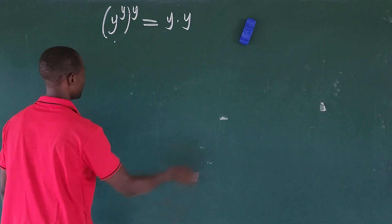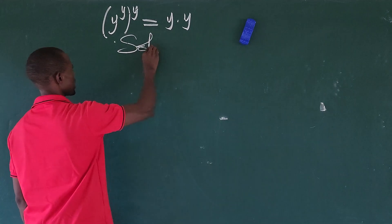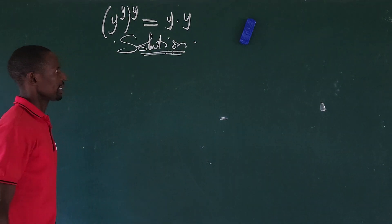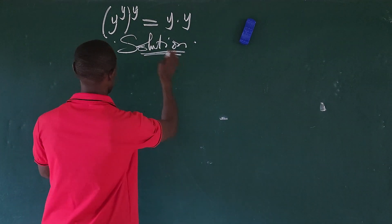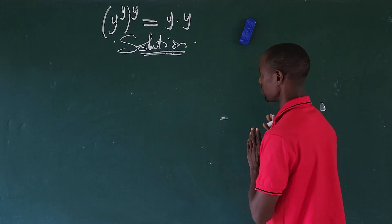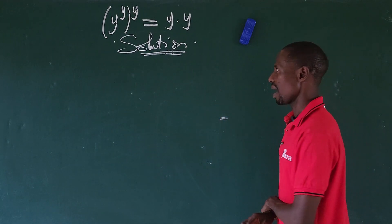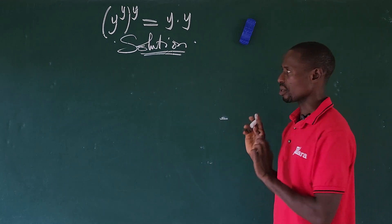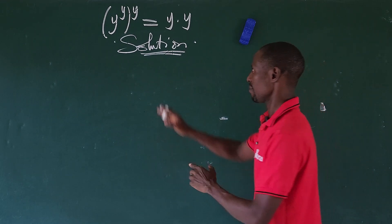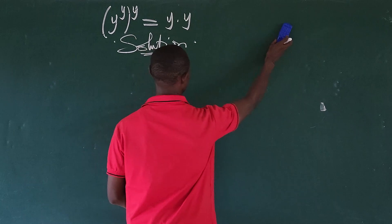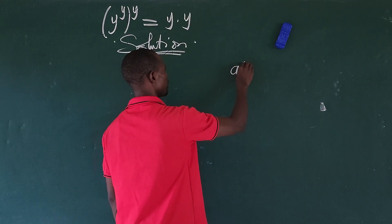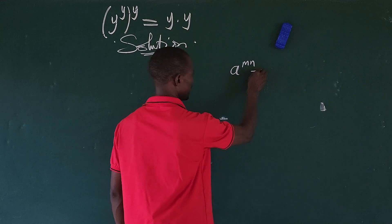Let's go into the challenge. We can rewrite both the left-hand side and the right-hand side of the equation using some simple laws of indices. For the left-hand side of the equation, there is a law that says if you have a to the power of m·n...